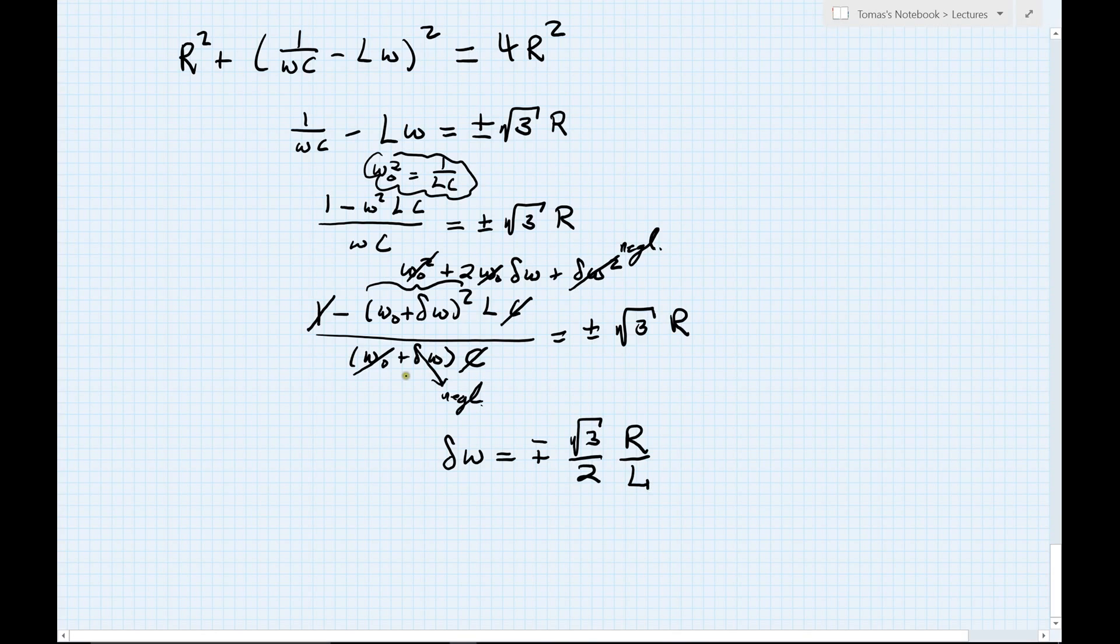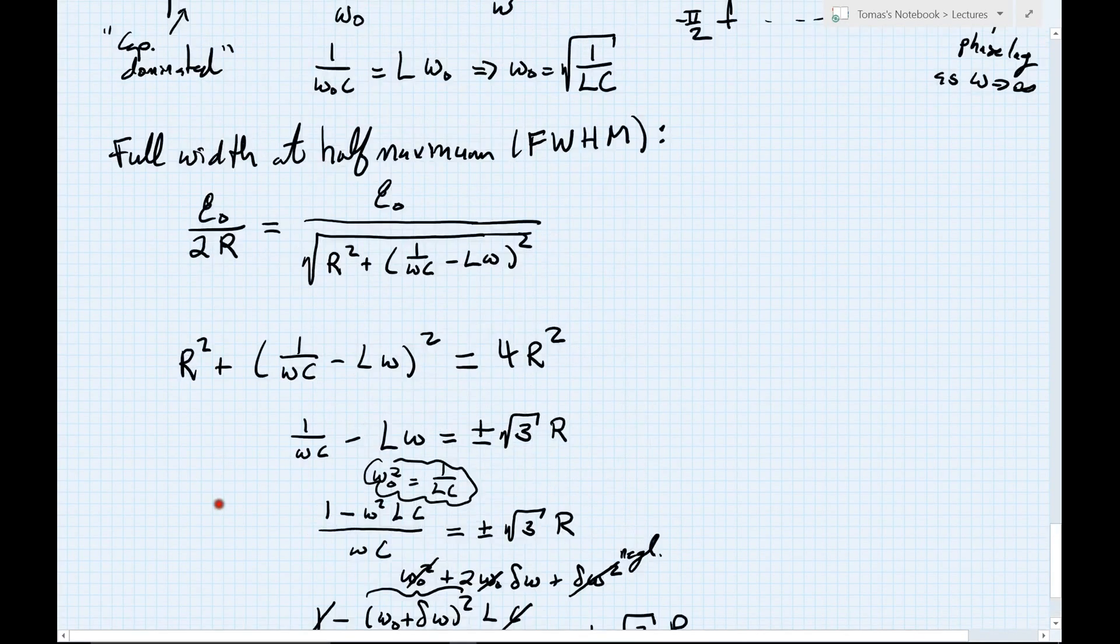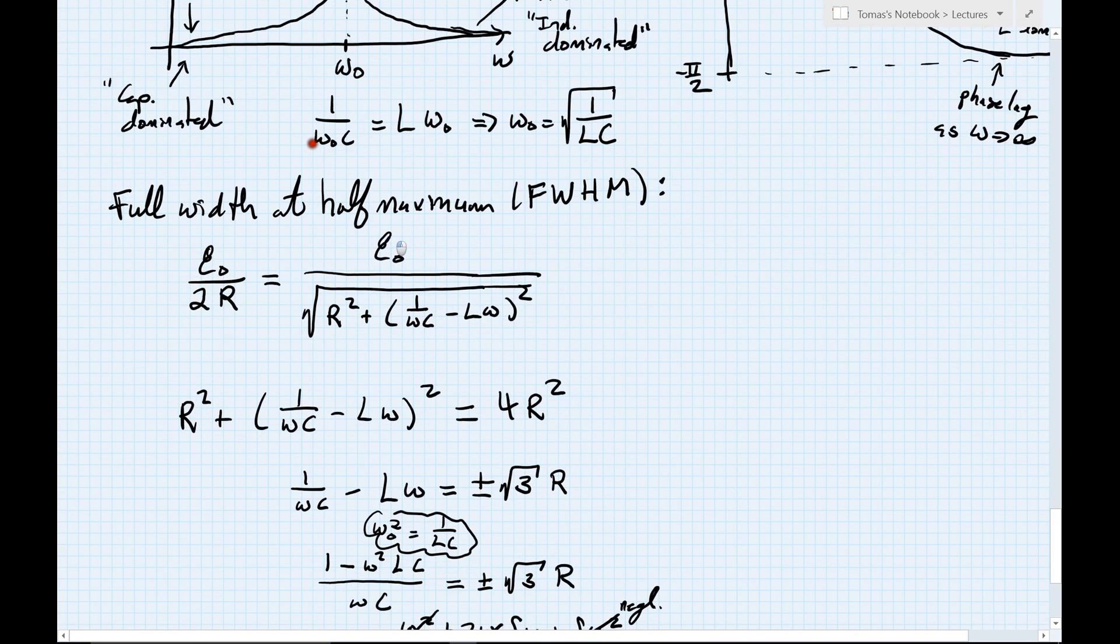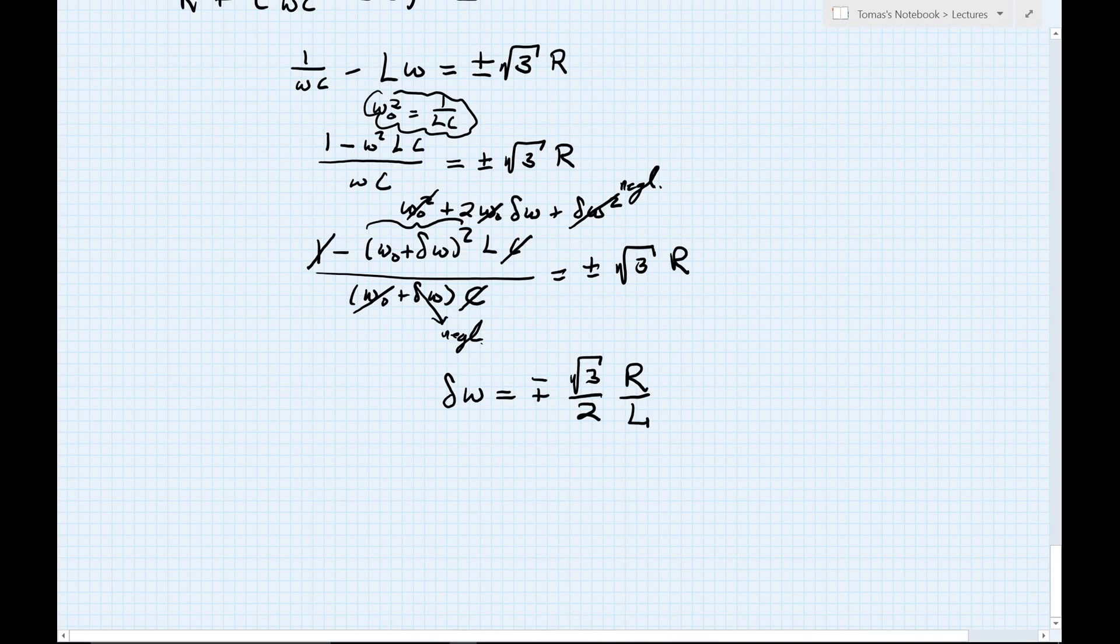So this tells me that the frequencies I'm looking for that give me half maximum are centered on omega naught, but go either in the plus or minus direction by this corresponding amount. So I'm going from the center line omega naught to plus or minus lowercase delta. The full width, the capital delta omega, the full width at the half maximum, which we were calling this full width capital delta omega is twice the magnitude of my little delta omega because this is how far I go on either side of omega naught. And that gives me my final result, root 3 times r divided by l.